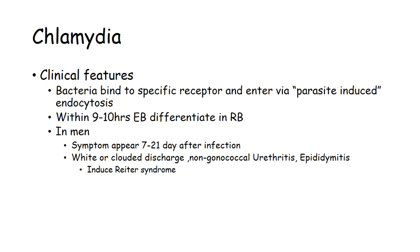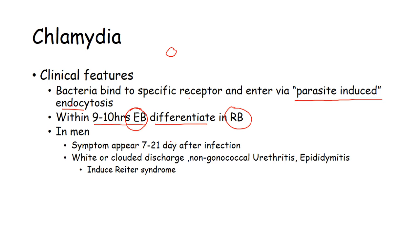The clinical features of chlamydia show that bacteria bind to specific receptors and enter via parasite-induced endocytosis — chlamydia induces itself to be taken up inside phagocytic cells. Within 9 to 10 hours, the elementary bodies differentiate into reticulate bodies. Once the reticulate bodies are developed, the organism is free to grow and spread through the body.